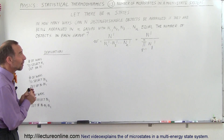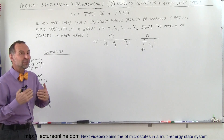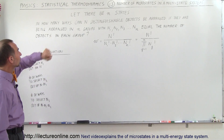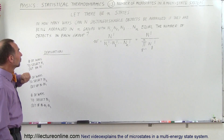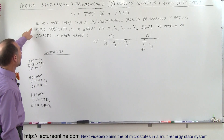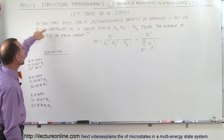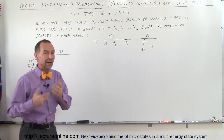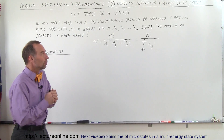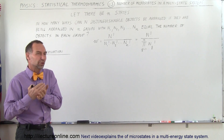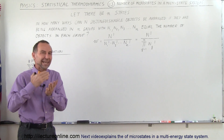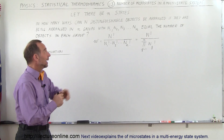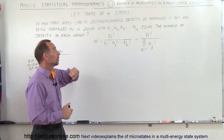Here we have a general example of how to deal with multi-state systems. Let n equal the number of states. So how do we deal with that? Well, what we want to figure out is: in how many ways can n distinguishable objects — where n is still the total number of objects — be arranged, given that we're going to have multiple states: n1, n2, n3, n4, n5, all the way to n sub n, n being the number of states.